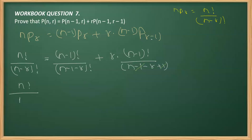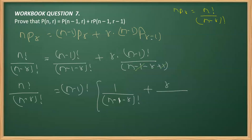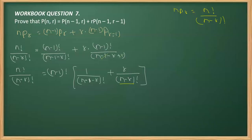Continuing with this, it is n! / (n-r)! is equal to — I can see that (n-1) whole factorial is common, so I take this as common. This gives 1 over (n-1-r) whole factorial plus r over (n-r) whole factorial. Now what you can realize here is that it is possible to write (n-r) in terms of this, so that is what we'll do in the next step.